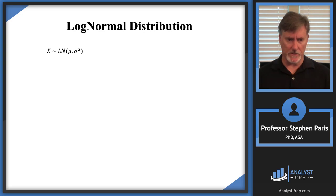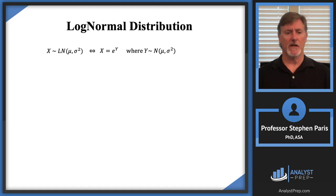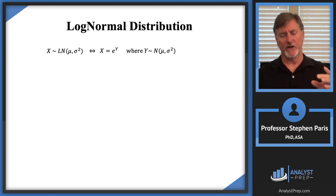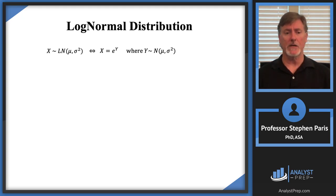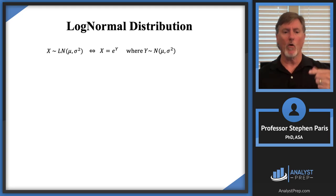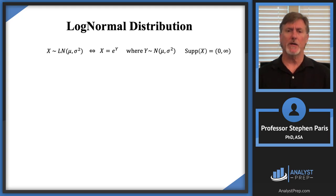Now let's discuss log-normal distributions. I'll use the notation that X follows a log-normal distribution, which means X = e^Y where Y follows a normal distribution. The normal distribution's values range from −∞ to +∞, but when you take e raised to any of those powers you get positive values — so the support of a log-normal distribution is from zero to infinity.